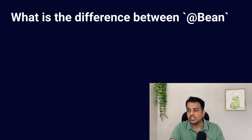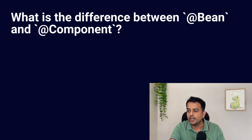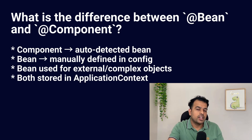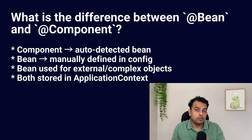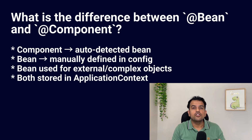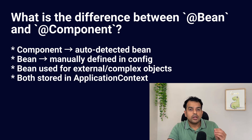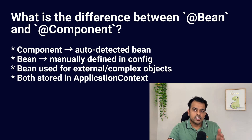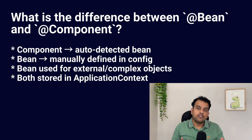What is the difference between @Bean and @Component annotation? @Component is used at the class level — when Spring does component scanning, it picks up those classes. @Bean is specifically used inside a configuration class. The most important difference is that @Component is for normal classes, while @Bean is for third-party classes or when you need more control. Both end up inside the Spring container, but the creation mechanism is different.